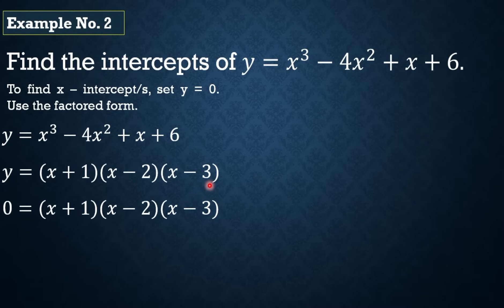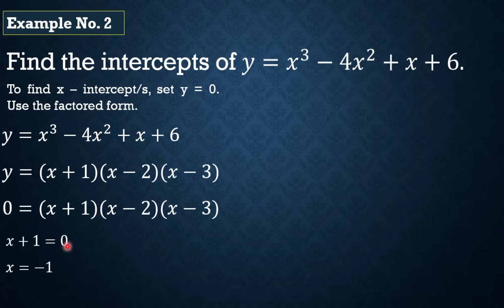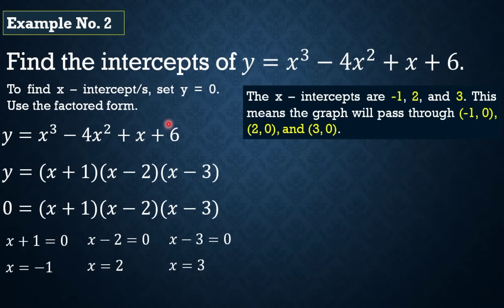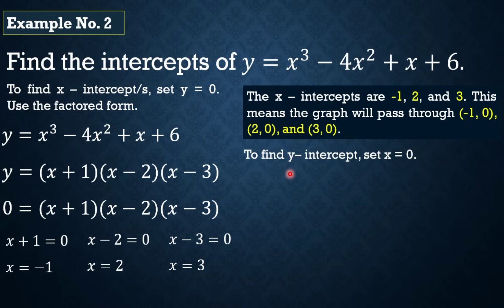Yung factored form nitong y = x³ - 4x² + x + 6 ay y = (x + 1)(x - 2)(x - 3). To find the x-intercepts, papalitan natin ang y = 0 and equate each factor sa 0. So: x + 1 = 0 gives x = -1; x - 2 = 0 gives x = 2; x - 3 = 0 gives x = 3. So the x-intercepts are -1, 2, and 3. This means that the graph will pass through (-1, 0), (2, 0), and (3, 0).